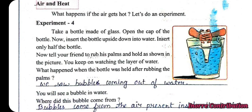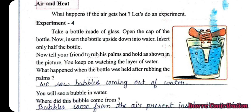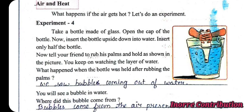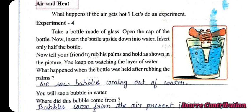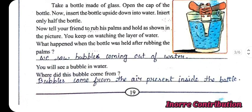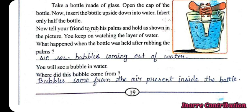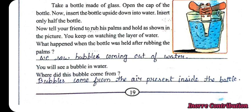Experiment 4: Air and heat. Take a glass bottle, open the cap, and insert the bottle upside down into the water — insert only half the bottle. Tell your friends to rub their palms and hold the bottle as shown in the picture. Keep watching the layer of water. When the bottle was held after rubbing the palm, we saw bubbles coming out of the water. The bubbles came from the air present inside the bottle.